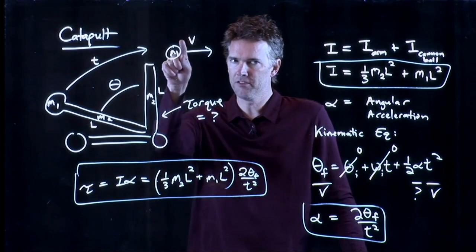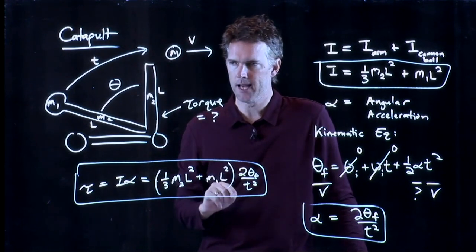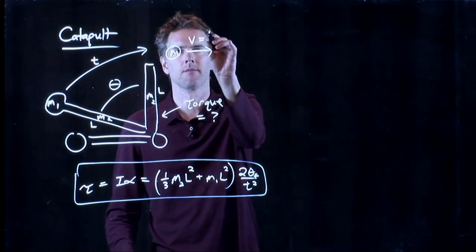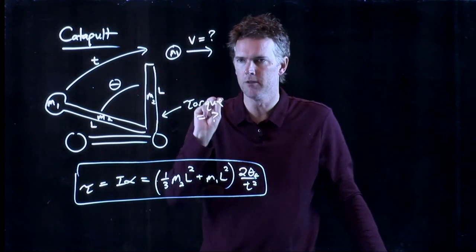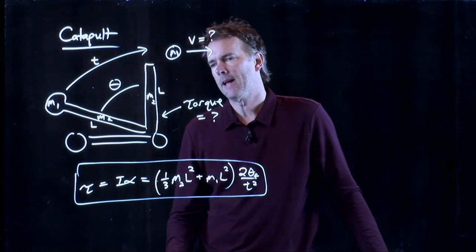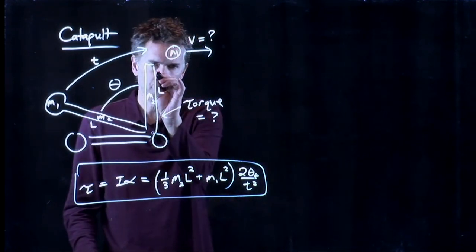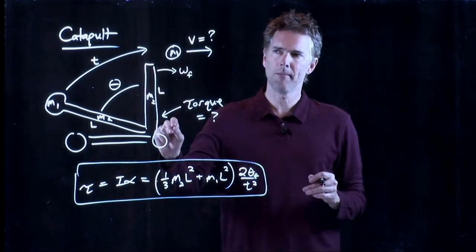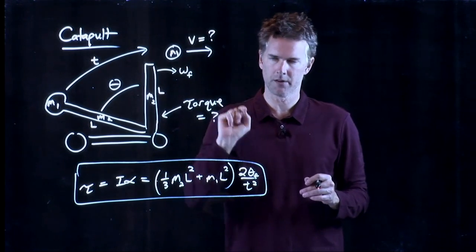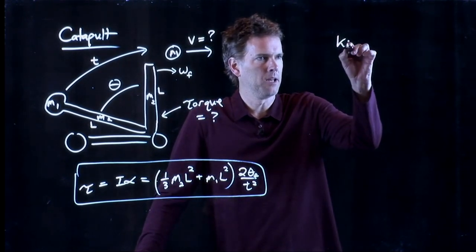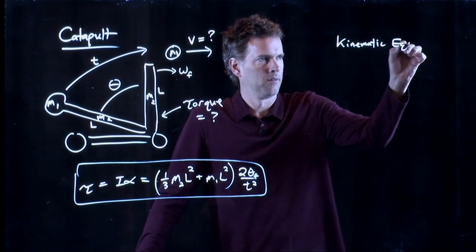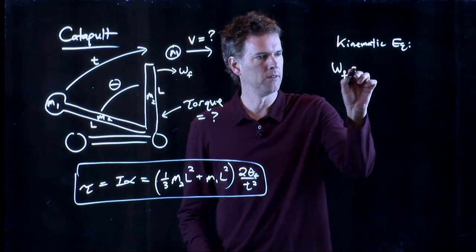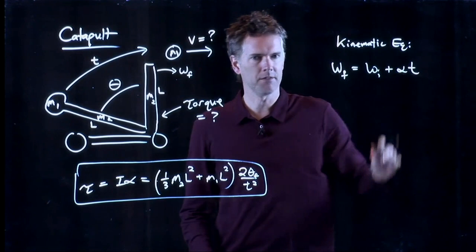Now, the second part of this question says, what's the speed? How fast does the cannonball actually get launched? Let's see if we can figure that out. So let's ask the question, what is the final speed of launch of that cannonball? And maybe one way to think about it is this thing is rotating with some omega final. And if I can figure out what that omega final is, I can probably relate it to the speed of the launch of the cannonball. So let's go back to the kinematic equations. And let's think about kinematic equations for this thing right here. Omega final equals omega initial plus alpha times T.